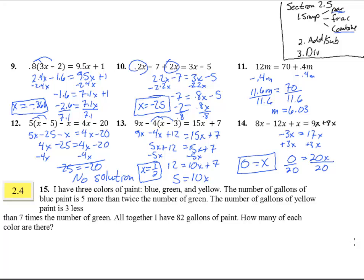Number 15. I have 3 colors of paint. Blue, green, and yellow. The number of gallons of blue is 5 more than twice the number of green. The number of gallons of yellow paint is 3 less than 7 times the number of green. Altogether I have 82 gallons of paint. So let's highlight that. That's all together. How many of each color? So we really need to find out how many blue, how many green, and how many yellow. We've got 3 different colors. And we're going to be trying to put these together. So let's translate this. All together I have 82 gallons of paint. That means that blue plus green plus yellow has to equal 82 gallons.